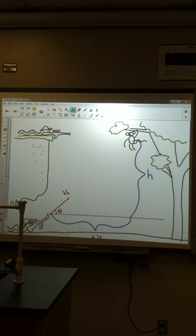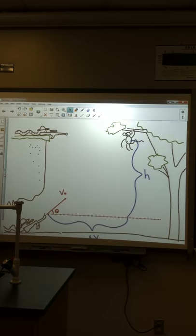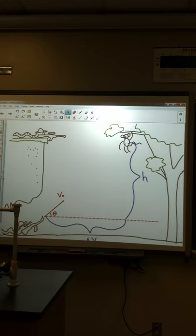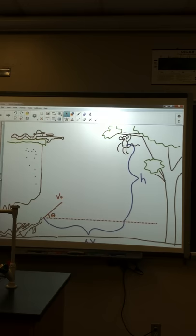Alright, in this problem we are trying to determine whether or not this poor little monkey is going to be shot. Now this is a classic physics example. I'm not the one who decided that monkeys should be shot here. I think there are many endangered species of monkeys, so just in general try not to shoot monkeys.